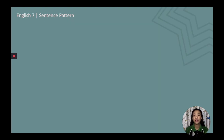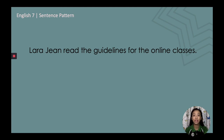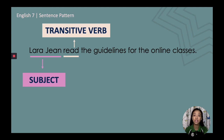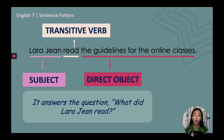'Lara Jean read the guidelines for the online classes.' The subject is Lara Jean — she did the action. The action is 'read,' so it is the transitive verb. The receiver of this action is 'the guidelines for the online classes,' answering the question: what did Lara Jean read? Therefore, 'the guidelines for the online classes' is the direct object.